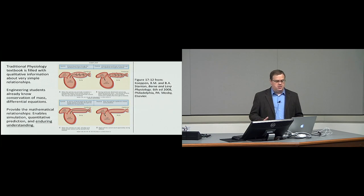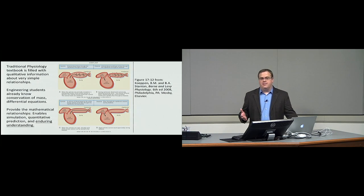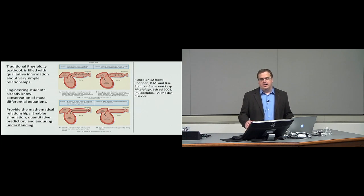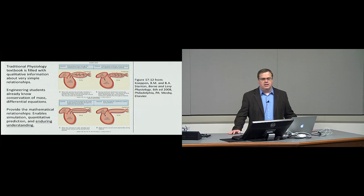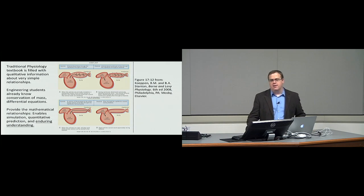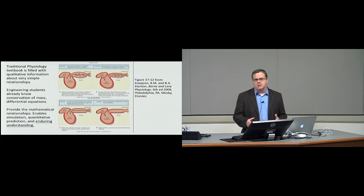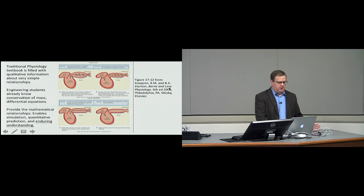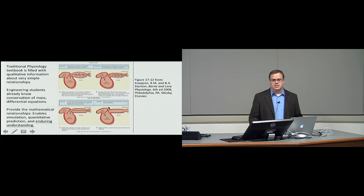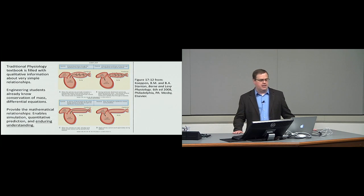A traditional physiology textbook is filled with a lot of qualitative information about how a system works. I show an example here of the left ventricle and the systemic artery — blood being pumped out into the systemic artery, stretching it, creating arterial pressure, going through the heart cycle as that blood leaks out through the systemic circulation and the arterial pressure comes back down. This figure from Bern and Levy captures the basic cardiac cycle, but it doesn't give students a quantitative understanding of how the system works. They're left to rely on memorization.